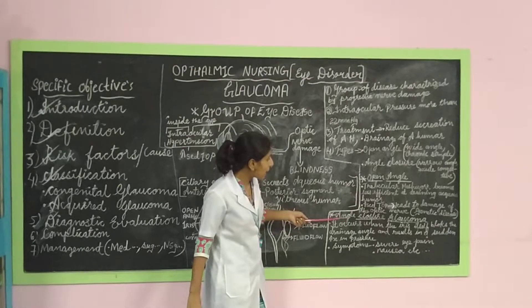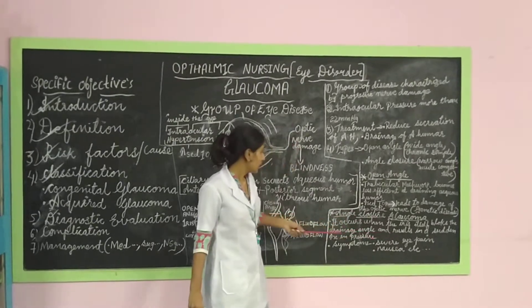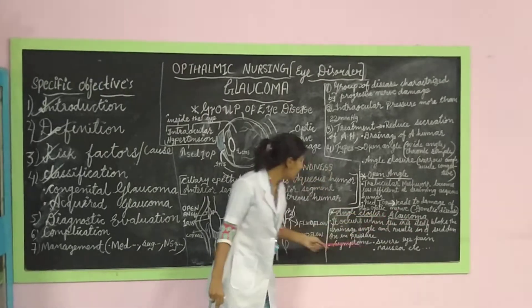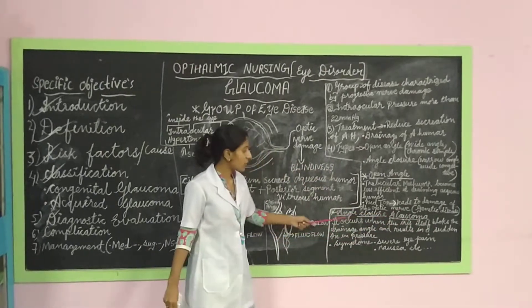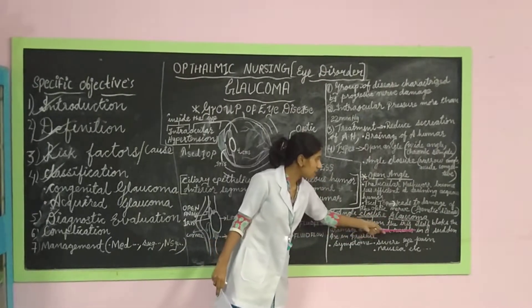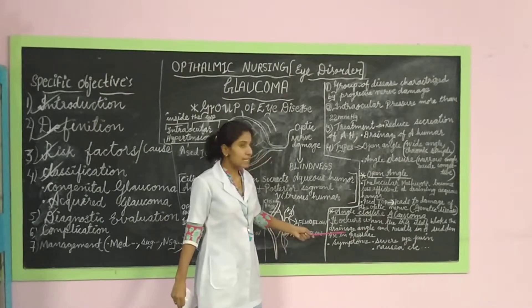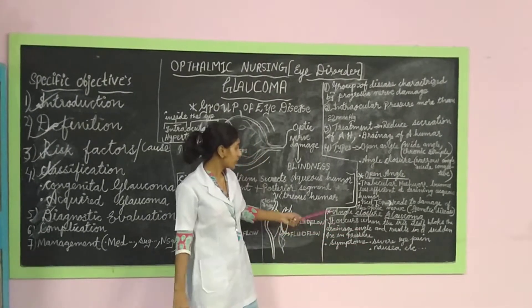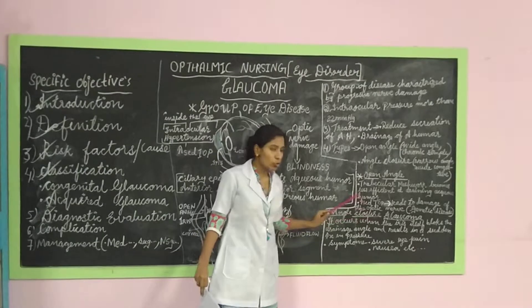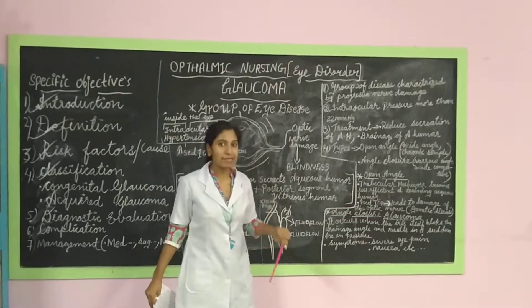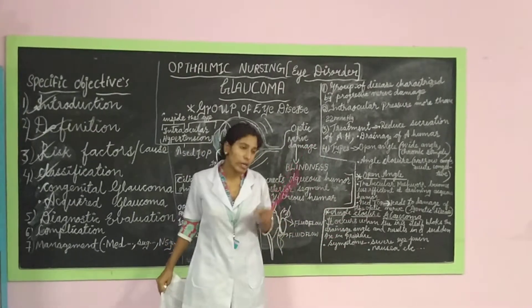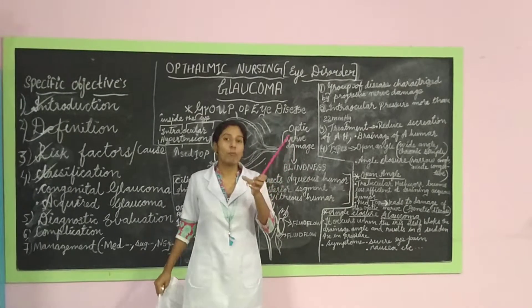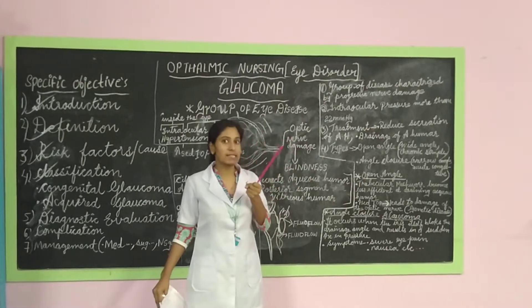Angle closure Glaucoma occurs when the iris itself blocks the drainage angle, resulting in a sudden increase in intraocular pressure.